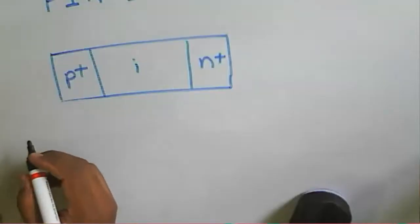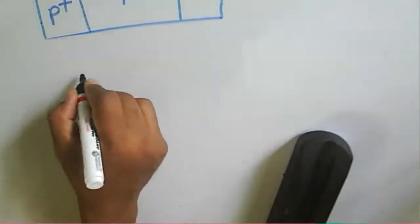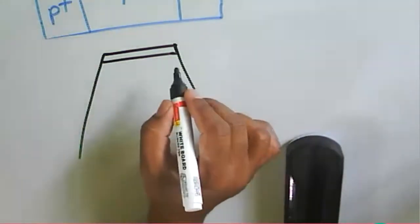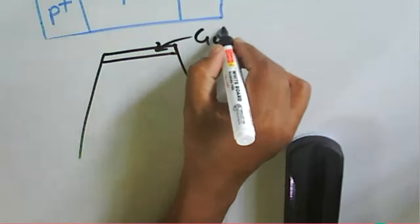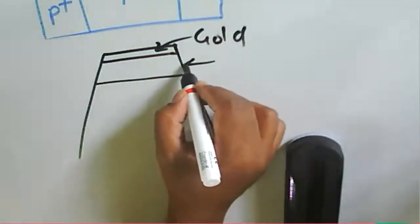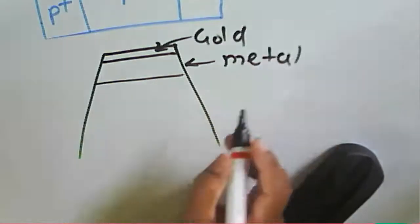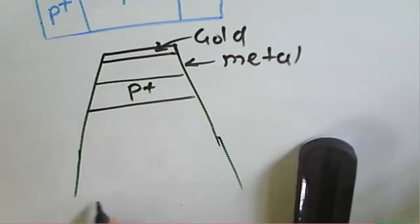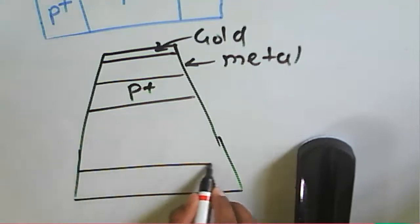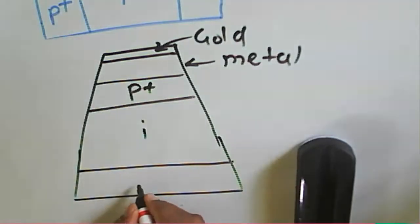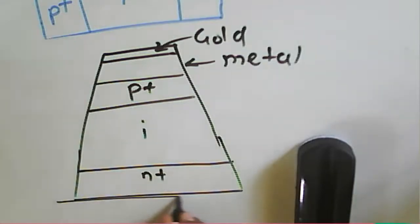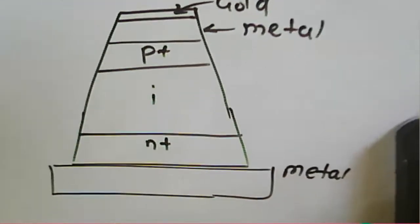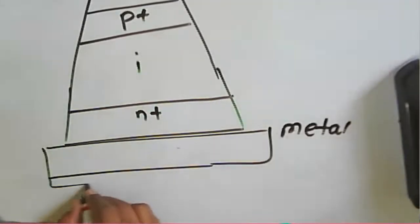The construction of the PIN diode uses gold contacts, with a P+ layer, then the intrinsic I region, then N+, and another metal contact. Titanium (Ti) is used for surface connections as a transition layer between the gold and semiconductor regions.